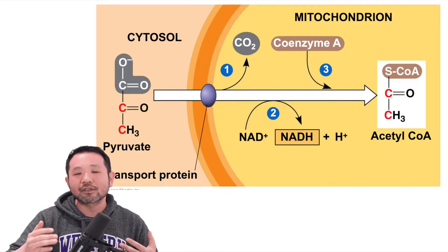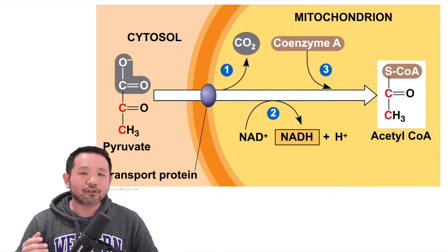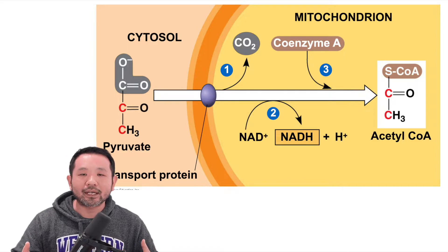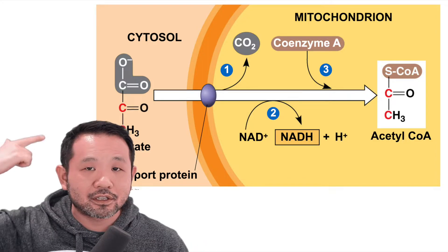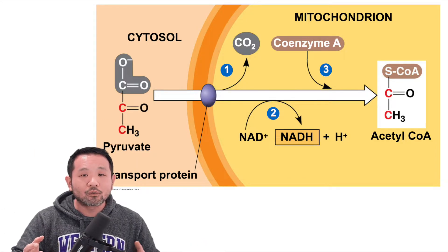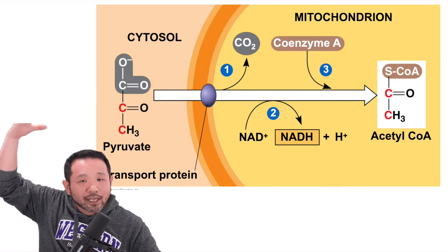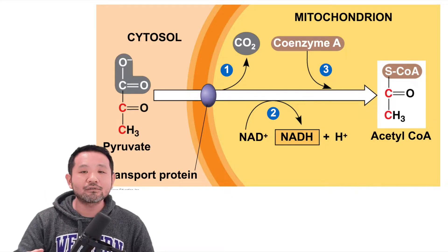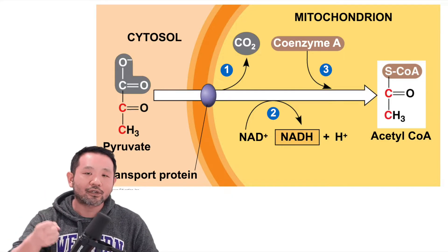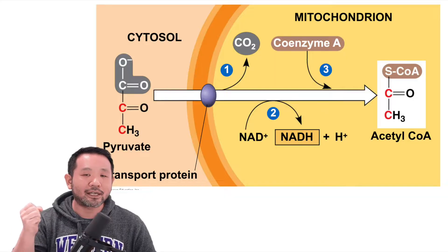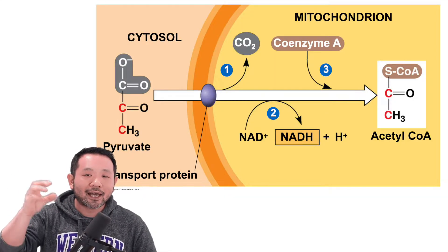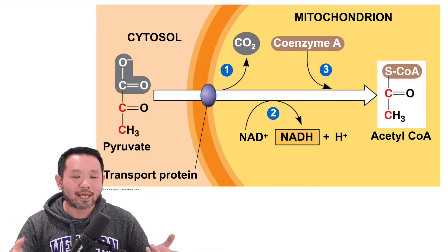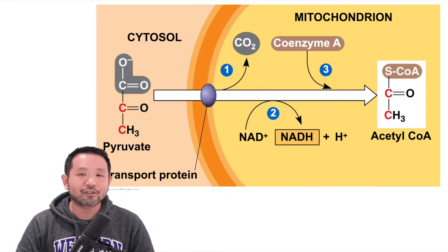I like to use the analogy of a bald man wearing a wig — once the wig falls off, the bald man quickly grabs a cap and puts it on his head. That cap is the coenzyme A, because as soon as the carbon dioxide falls off, electrons are captured by NAD+ into NADH, and coenzyme A attaches to the two-carbon substrate, becoming what we call acetyl-CoA. And that is all there is to pyruvate oxidation.